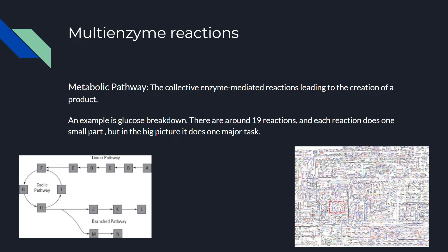Finally, we'll talk about multi-enzyme reactions. A metabolic pathway is the collective enzyme-mediated reactions leading to the creation of an end product. For example, glucose breakdown involves about 19 different reactions, each doing one small part of one major task. On the left side of the picture, we can see a linear pathway: A goes to B, B to C, C to D, D to E, then F. We can also see a cyclic pathway, which forms a circle and rotates back, and a branch pathway from H to J to M, where there are two options.